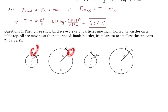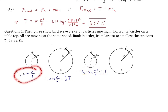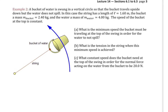Concept question: How does tension change as a function of radius and mass, holding velocity constant? Case 1 is the baseline with mass m and radius r. Case 2 doubles the radius, so tension is halved. Case 3 doubles the mass, so tension doubles. Case 4 doubles both, and the effects cancel — tension equals Case 1. Ordered largest to smallest: Case 3, then Cases 1 and 4 tied, then Case 2.